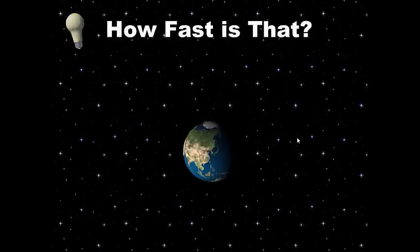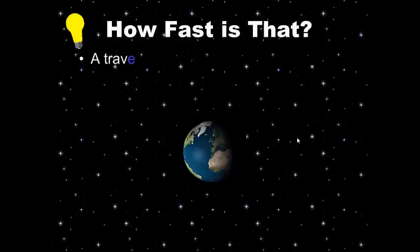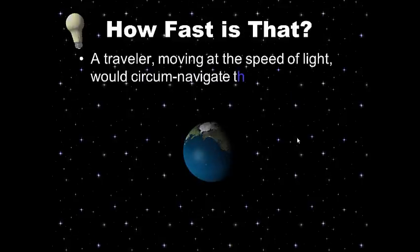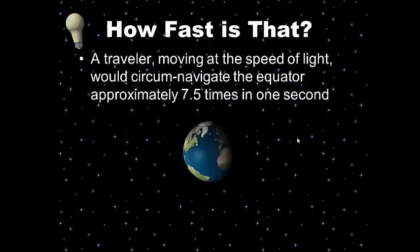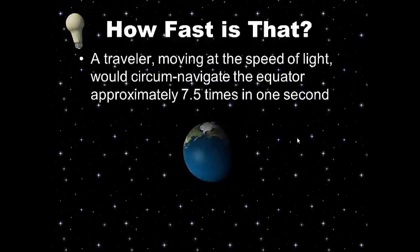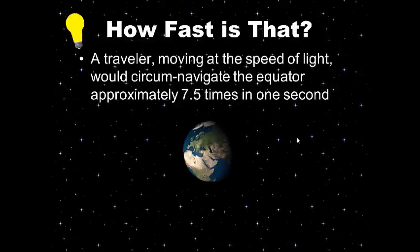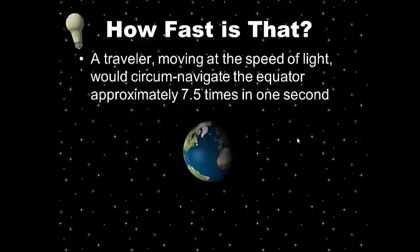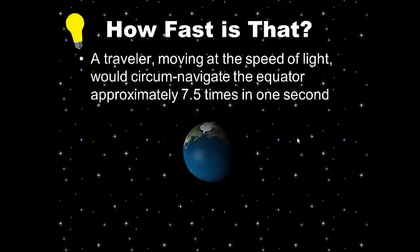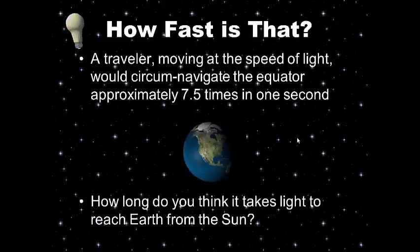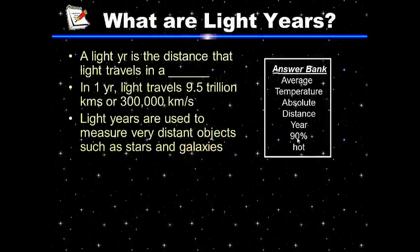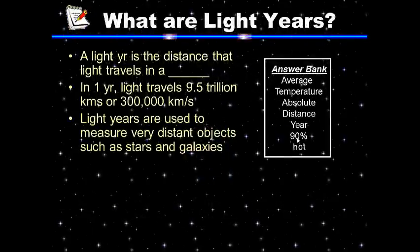To give you an idea of how fast light is: if you were moving at the speed of light, you would go around the equator of the earth approximately seven and a half times in one second. So how long does it take light to reach the earth from the sun? It takes about eight minutes.